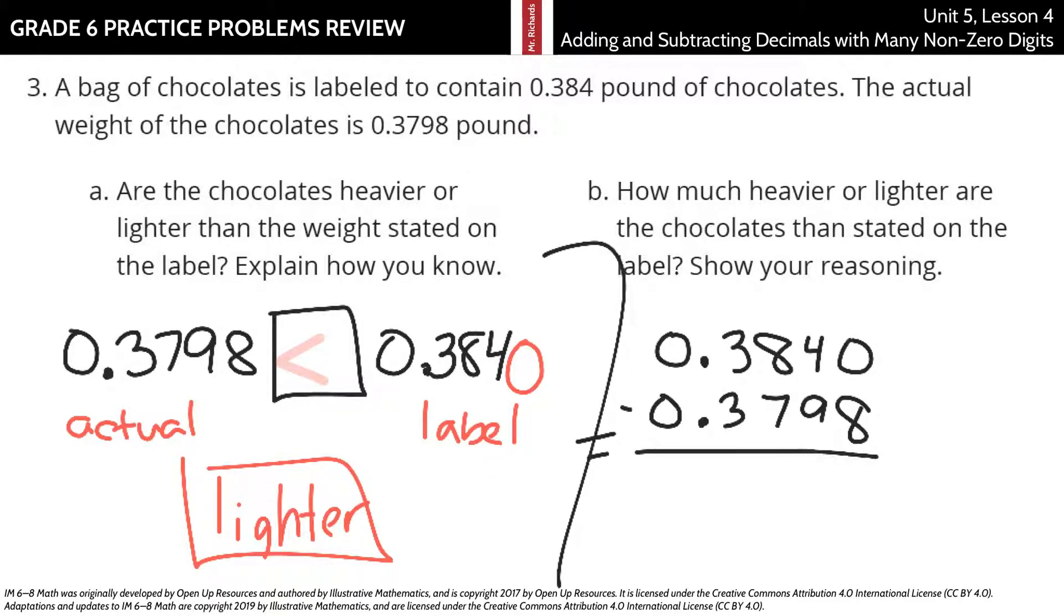And there is some unbundling that we're going to need to do here. We'll borrow from the thousandths place to give us ten ten-thousandths. And so, now, ten minus eight is two.